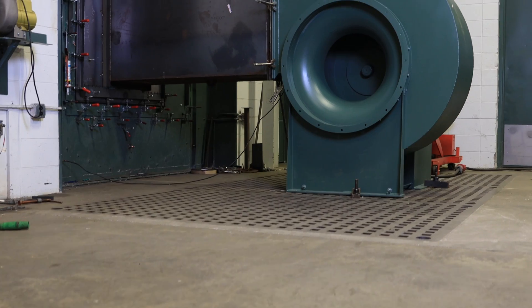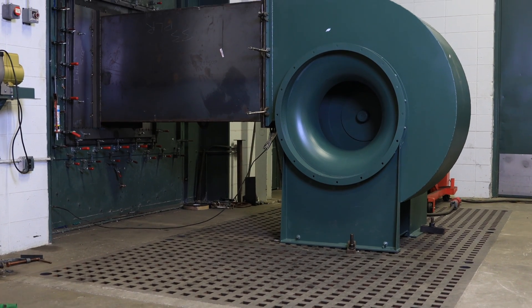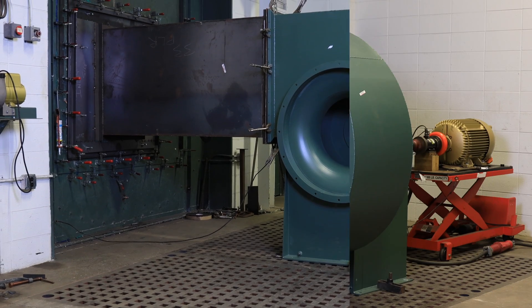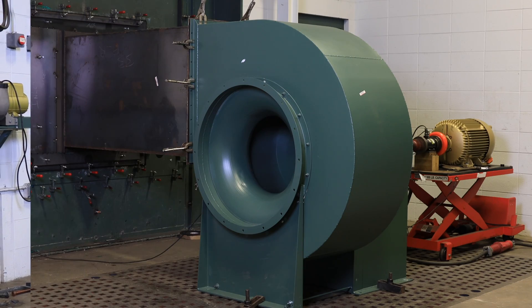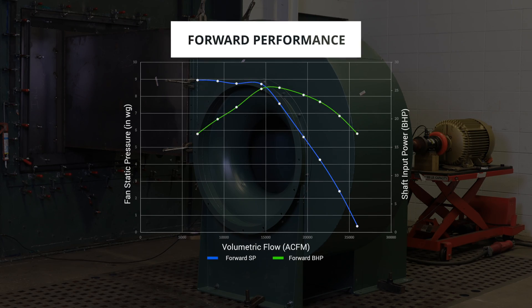Let's start our test by running the fan in its correct design rotation, clockwise. During the test, multiple measurements are taken and these are used to determine points of flow, pressure, and power at a specific speed and test density. These combined points are used to establish fan curves.